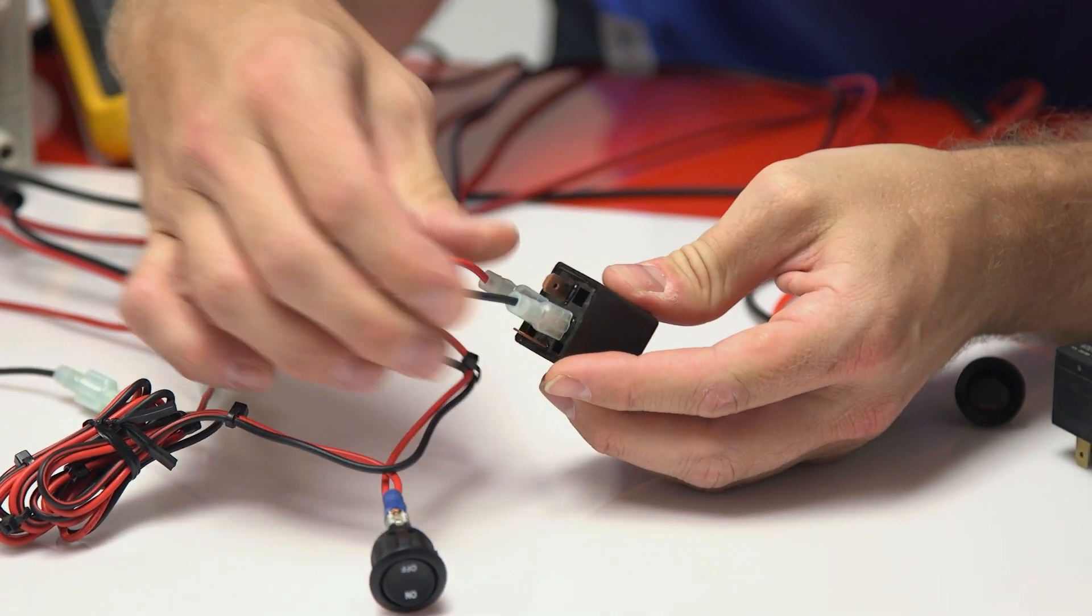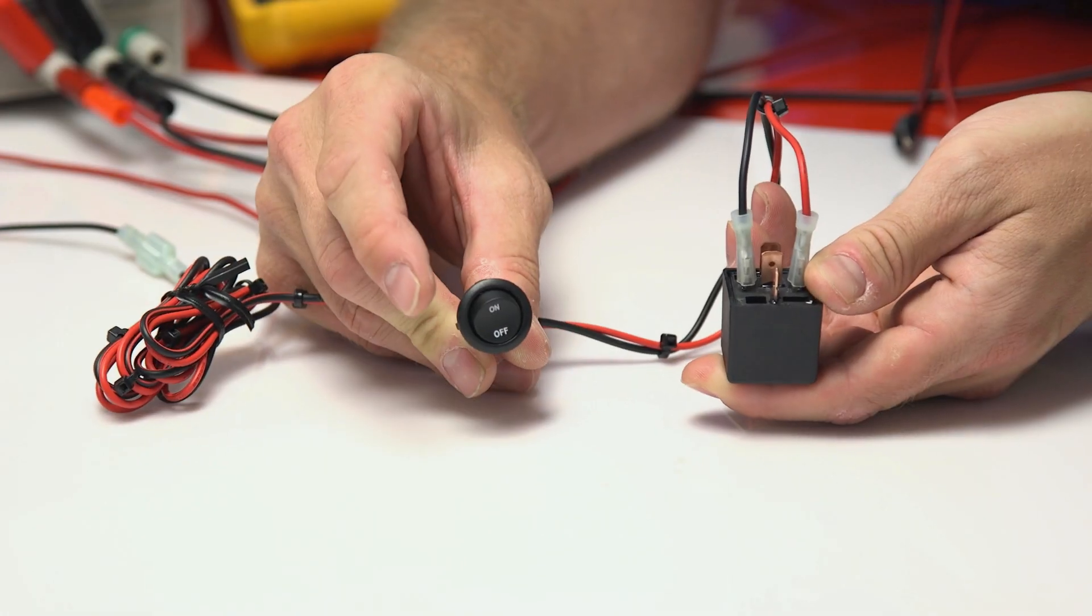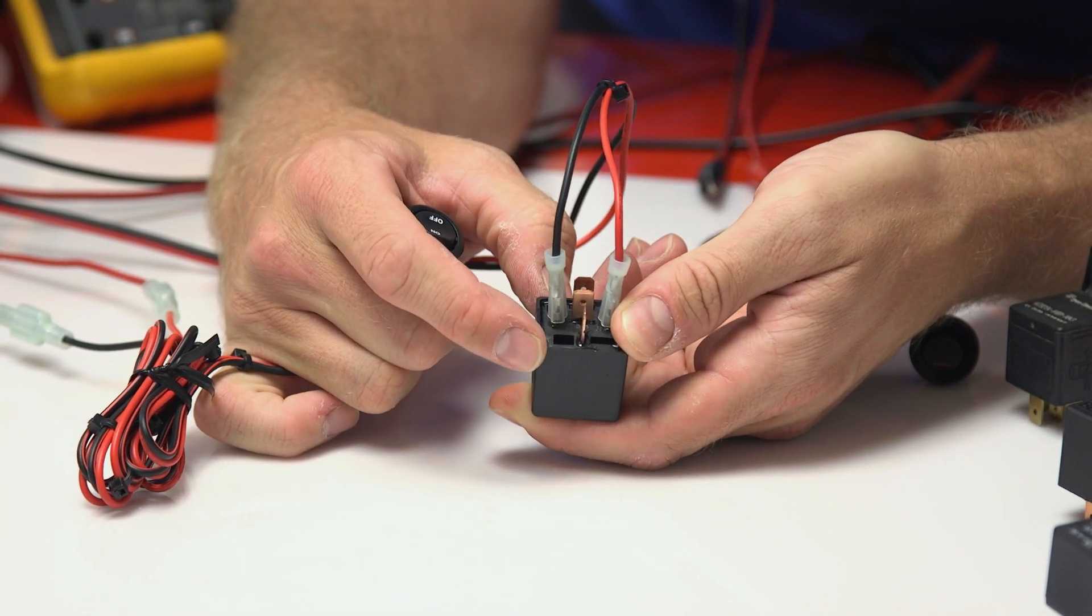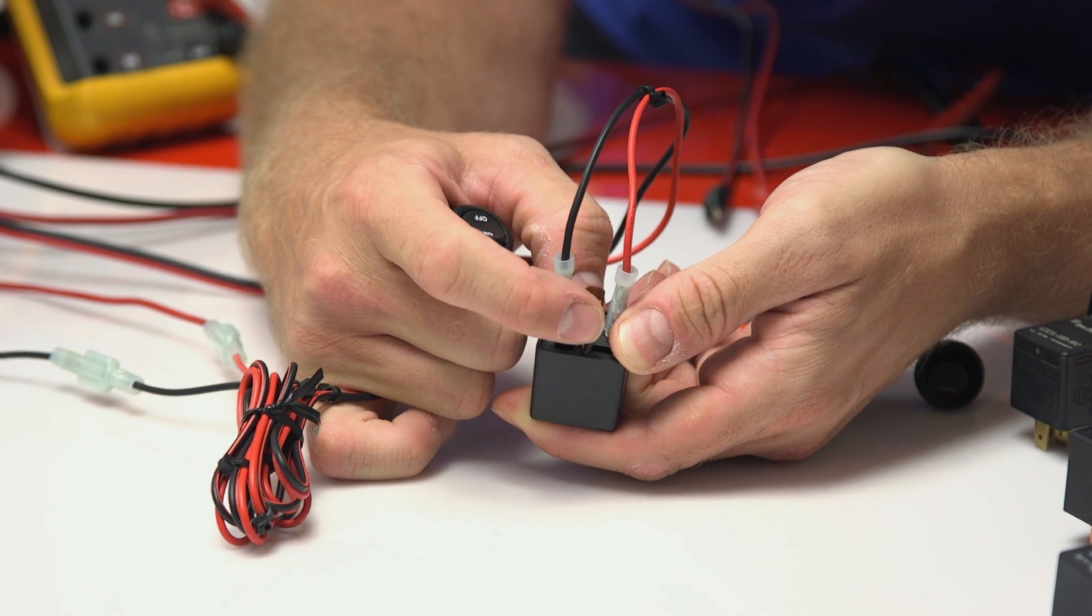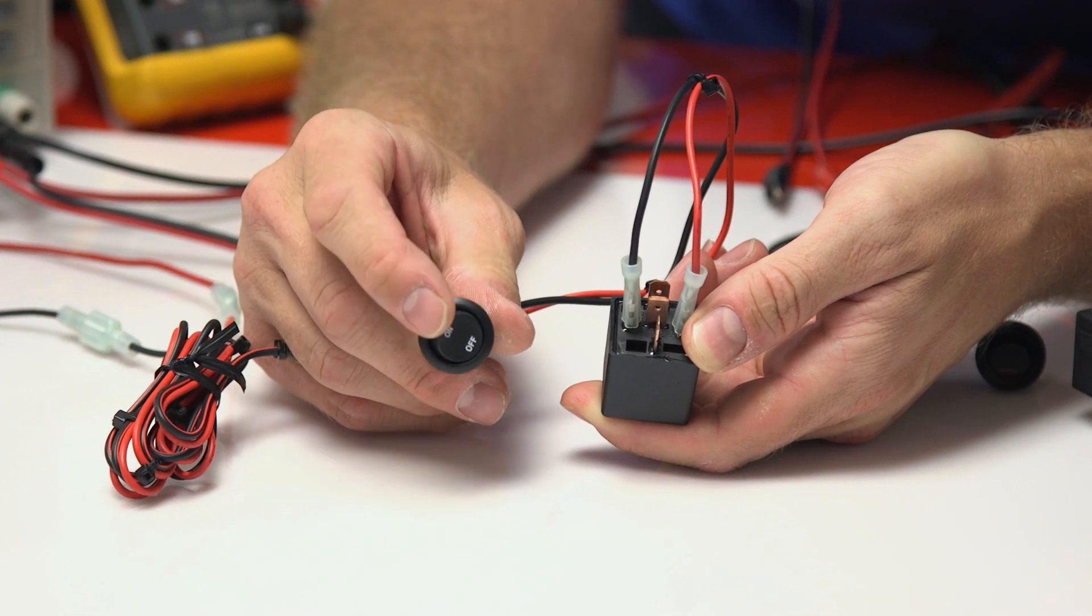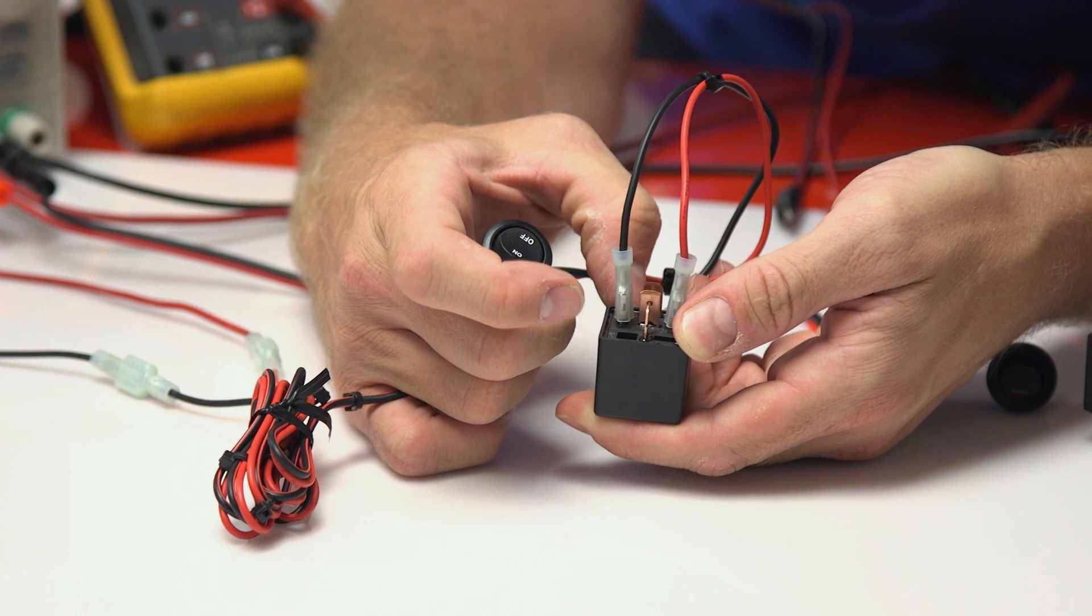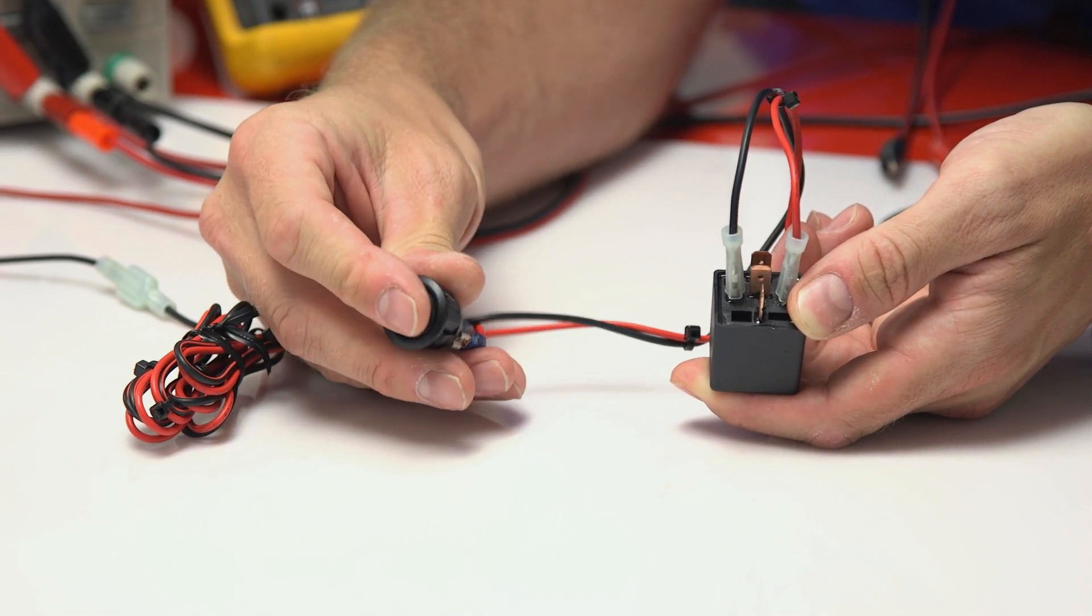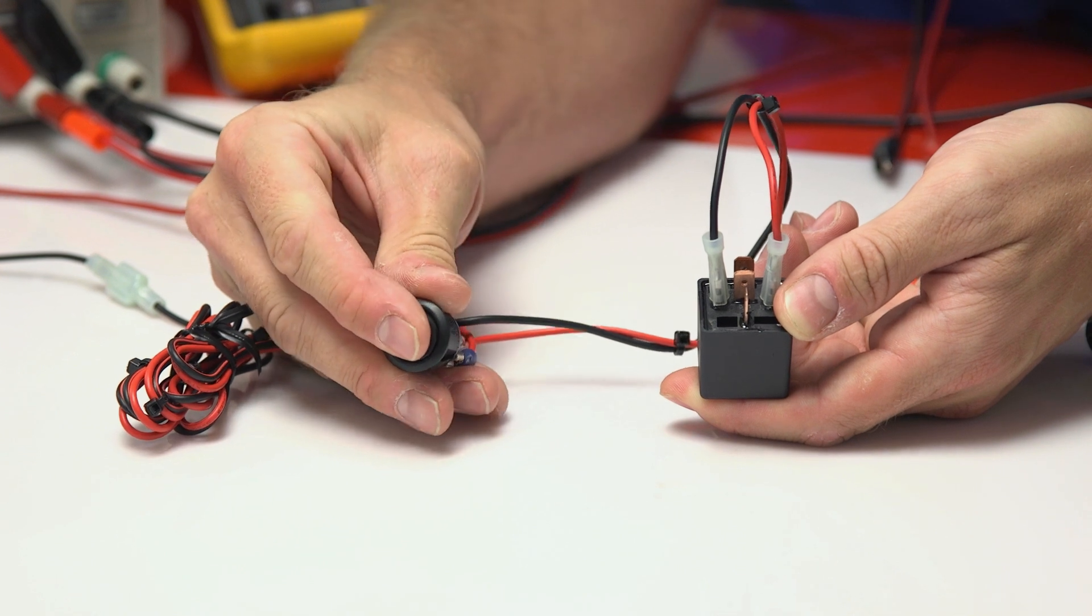So now that we have these two connections, we use this switch to control these contacts. In a normally closed position, the 30 and the 87A are connected, and then when you open the switch, the 30 and the 87 make contacts. So I'll quietly try to operate the switch so you can hear the clicking of the relay.